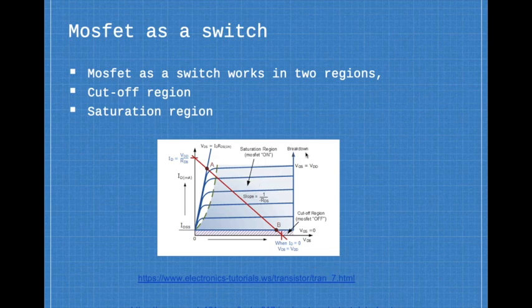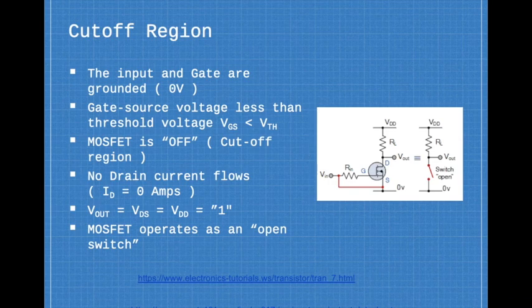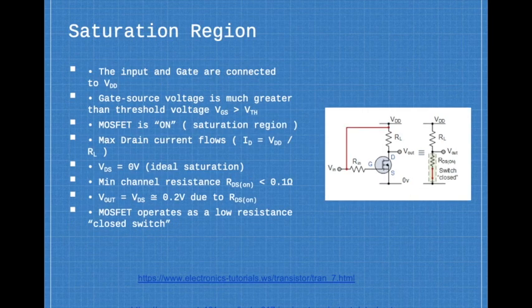In the cutoff region, the input and gate are grounded, that is there are zero volts. Gate source voltage is less than threshold voltage VGS < VTH, and MOSFET is off in the cutoff region, and no drain current flows, ID = 0 Amps.